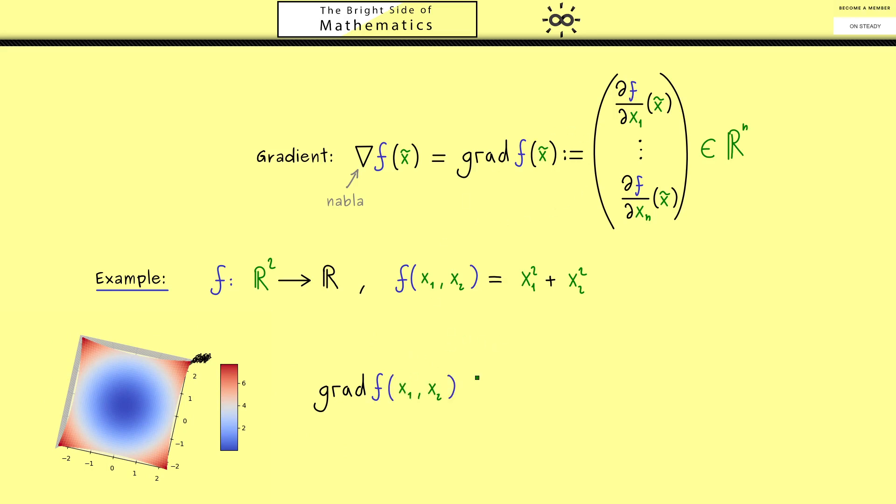This is something we can keep in mind and now the question is can we calculate the gradient of f? Now to make it simpler I call the point x̃ we put in also (x₁, x₂). So for calculating it we know we need to calculate partial derivatives, namely two of them. And the first one is simply 2x₁. And in the same way we see the second one is 2x₂.